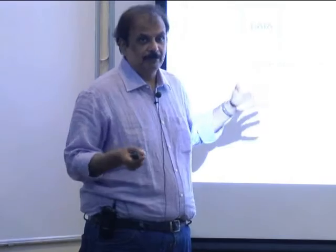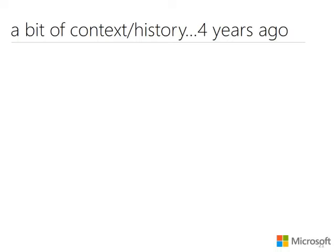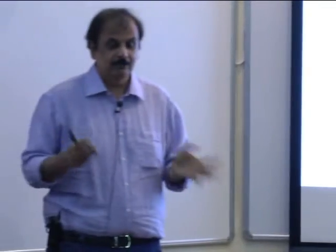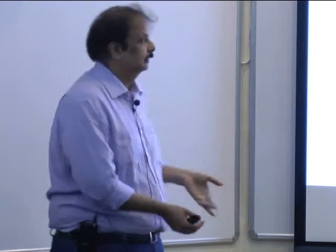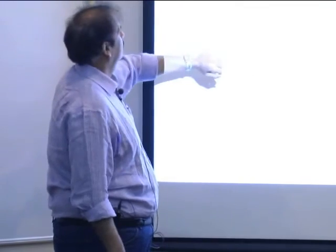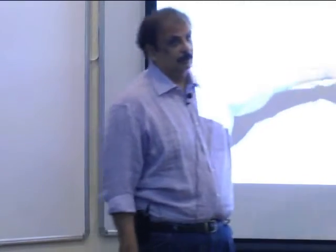Several years ago there was a lot of bad press in the US about how the iPhone brought down AT&T's cellular network. Articles from September and December 2009: 'Customers angered as iPhones overload AT&T,' 'AT&T is to blame.' AT&T's network was really bad. Does anyone know why this was? Let me explain.